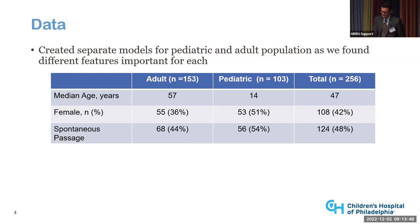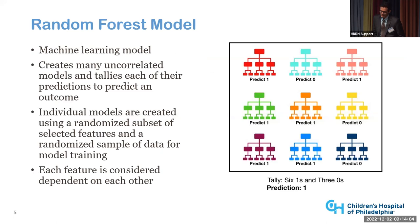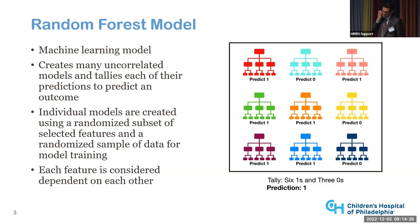We used a random forest model, a type of machine learning model especially good at making binary predictions when you have many features to select from. It creates many uncorrelated models and tallies each of their predictions. In this case we have nine models, each making a separate prediction, and the overall prediction goes with the majority. It selects a randomized subset of features and a randomized sample of data — for example, our red model might randomly select three of five features, our blue model a different three, and our green model four.